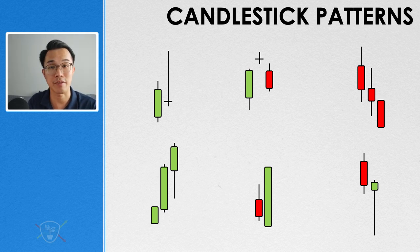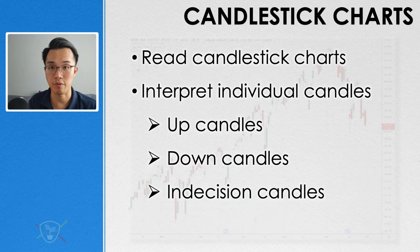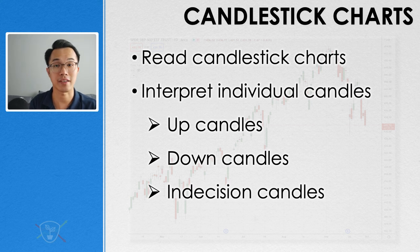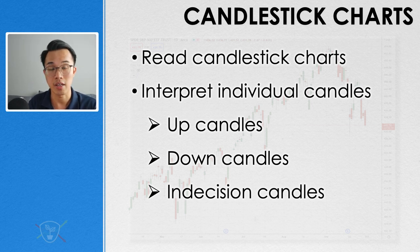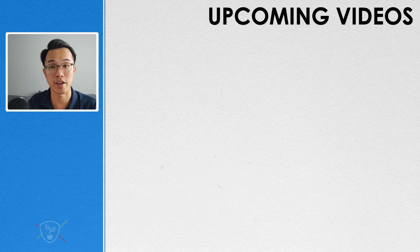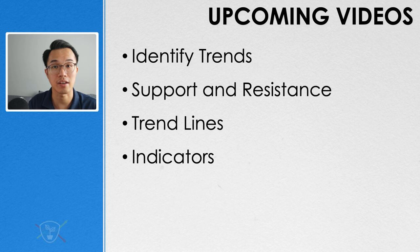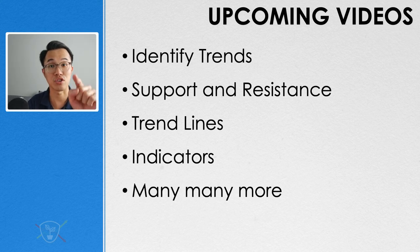Perhaps in the future I can make videos about these particular patterns. For today's video, we've talked about how to read a price chart, how to understand individual candles, and what up candles, down candles, and indecision candles are. This is the basic fundamentals of technical analysis and it can set you up to go far in your investing journey. If you found it helpful, do support the channel by leaving a like. In this technical analysis series, we're going to be talking about a wide range of subjects — coming up next, how do we identify trends, support and resistance, drawing trend lines, indicators, and much more. Make sure you are subscribed so you don't miss out.